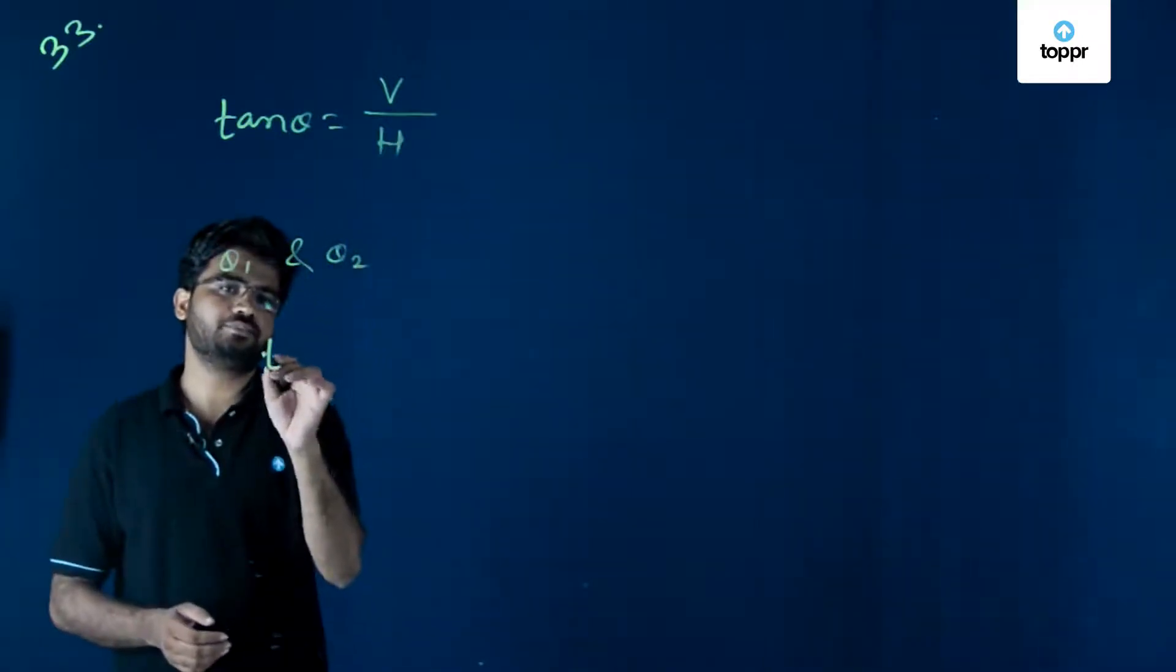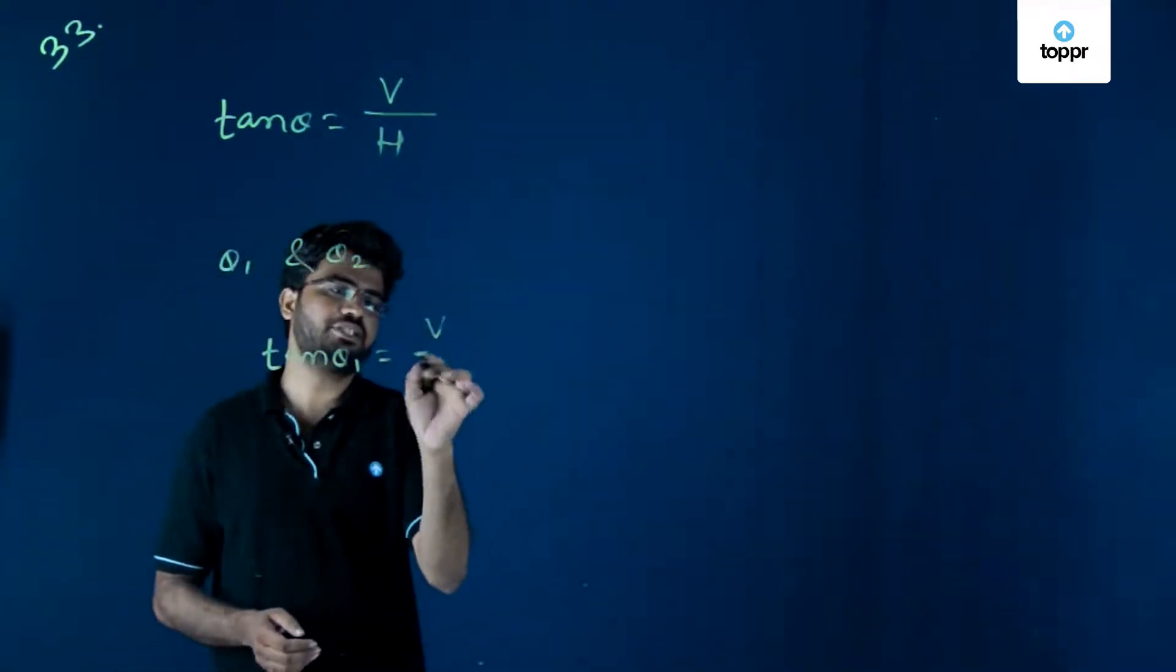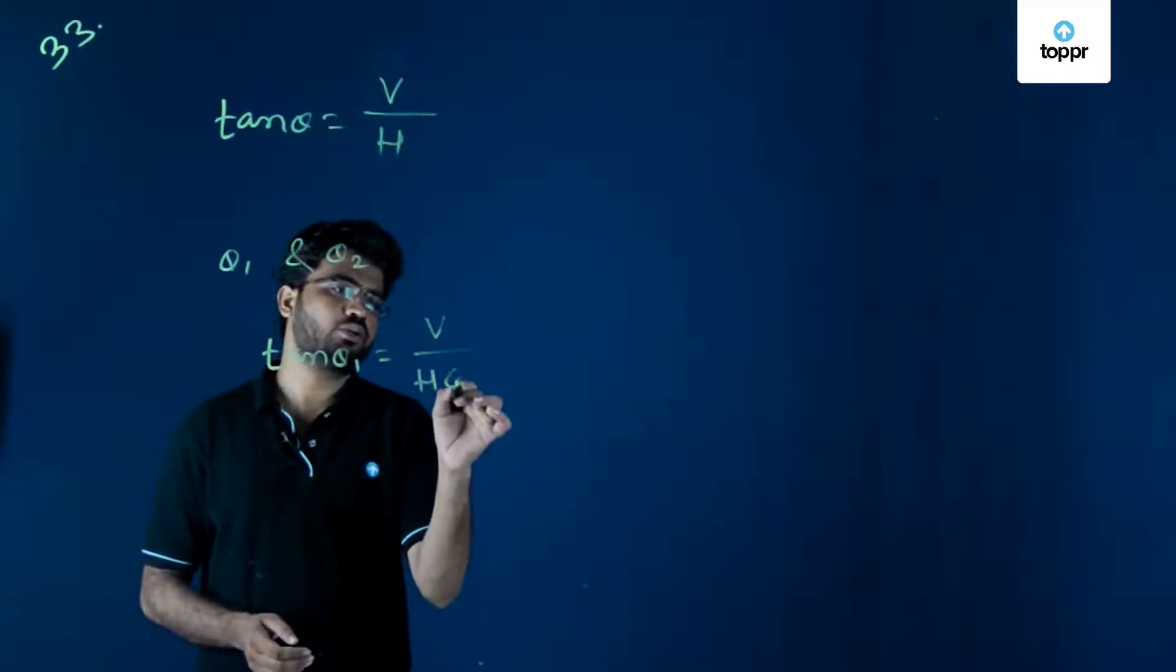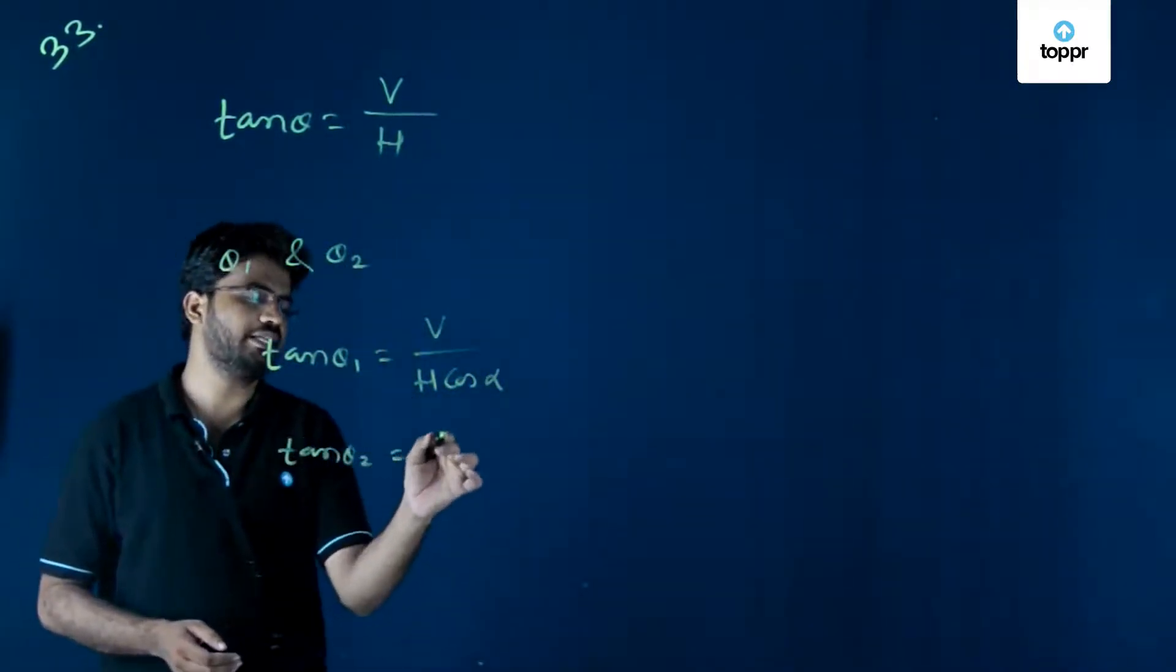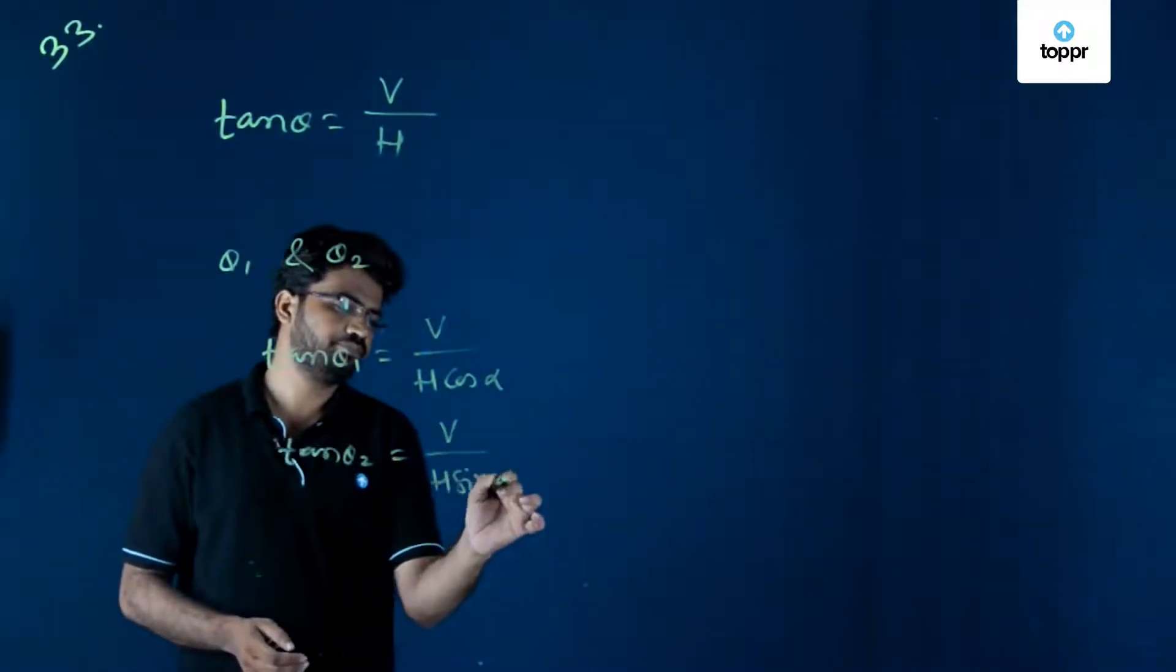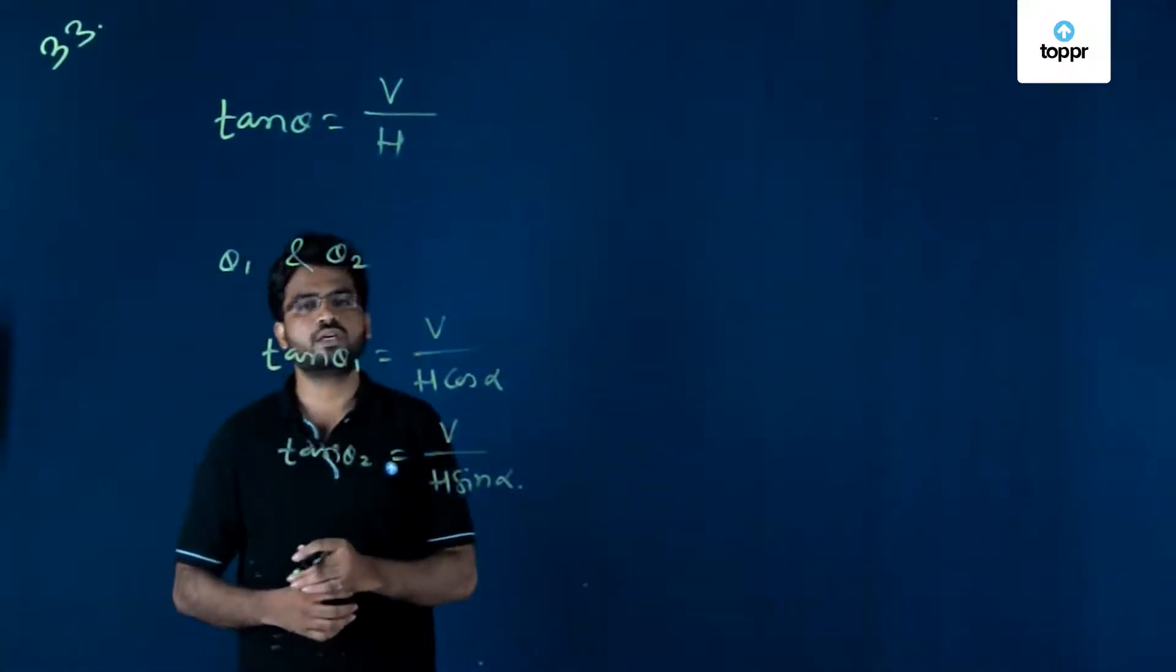Then tan theta 1 can be written as V divided by H cos alpha, and likewise tan theta 2 can be written as V divided by H sin alpha.